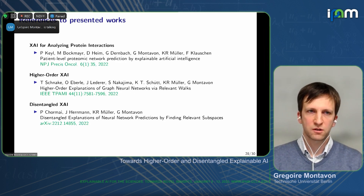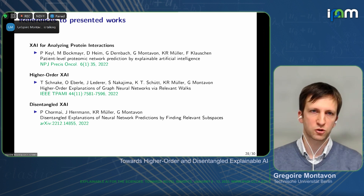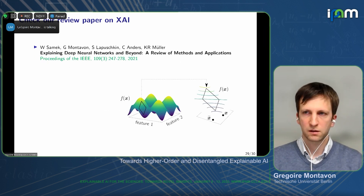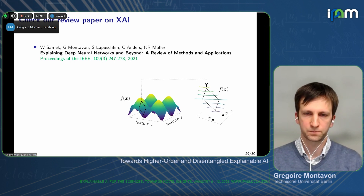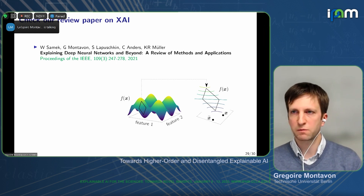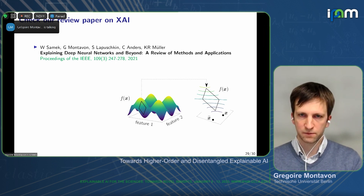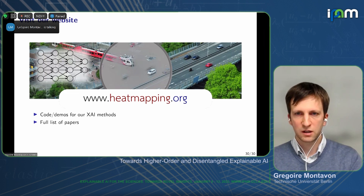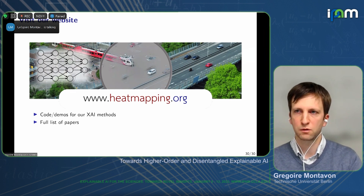These are references to the works presented today — on analyzing proteomics data, higher-order and disentangled XAI — and a reminder of our review paper published two years ago, which covers more classical topics of explainable AI and some higher-order content, though not disentangled XAI. You can also visit our website heatmapping.org, where we have online code and demos for XAI methods as well as our full list of papers. Thank you for your attention.